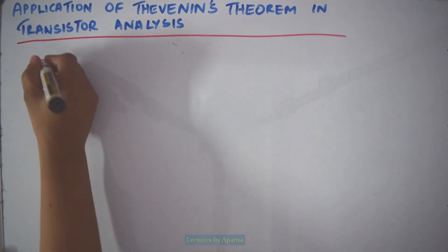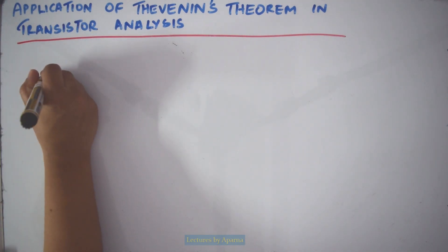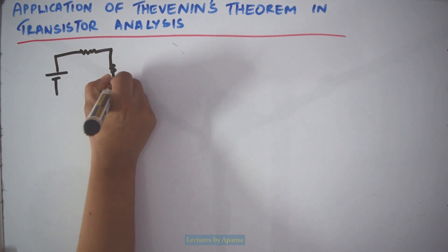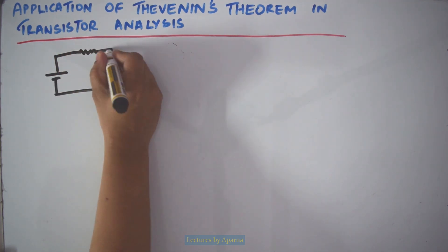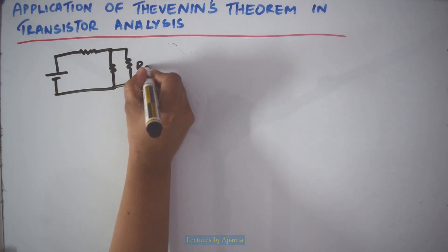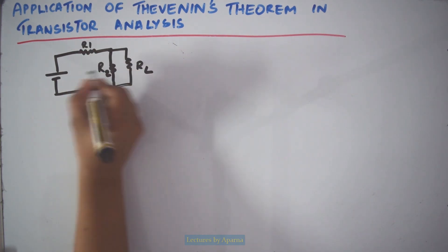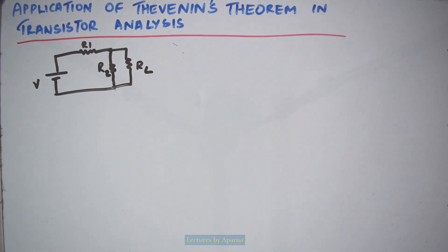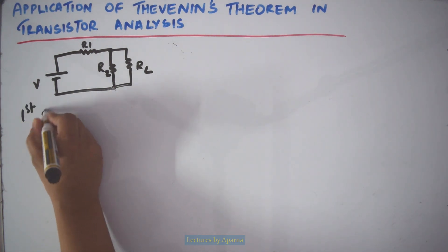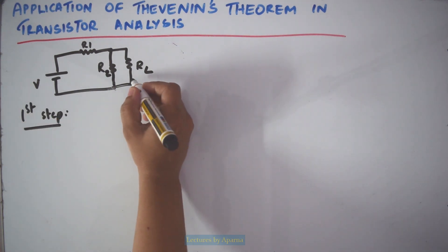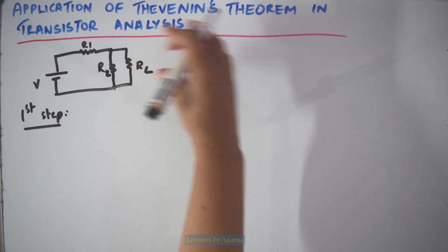Suppose I am having a network like this, with RL, R1, R2, and V. The first step in applying Thevenin's theorem is to remove the load resistance — take away this RL.